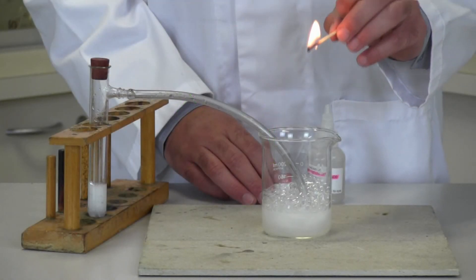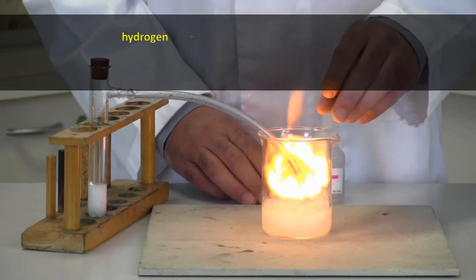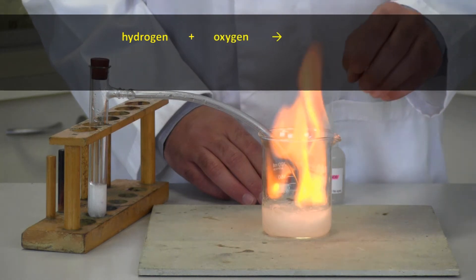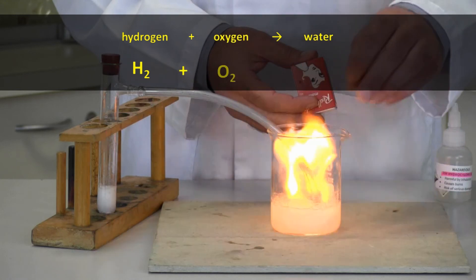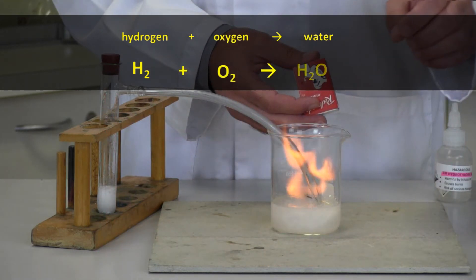The chemical equation for hydrogen burning is hydrogen plus oxygen produces water. H2 plus O2 produces H2O.